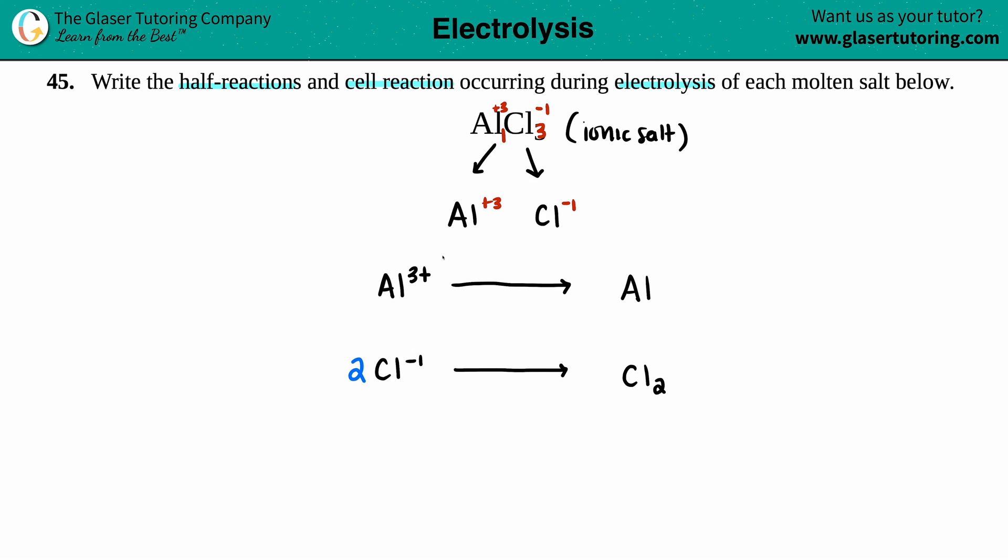Now we can balance the charges. For up top, the aluminum was an overall plus three charge, and then the aluminum on the right side was zero. You always add electrons to the more positive side, bringing it down to the more negative. So in this case, I'm going to add three electrons, because three minus plus three plus will get me zero. For my chlorine half reaction, I have an overall charge of negative two. There was no charge on the product side, so that's zero. I'm going to add electrons on the product side. I have to add two electrons. So we have our half reactions.